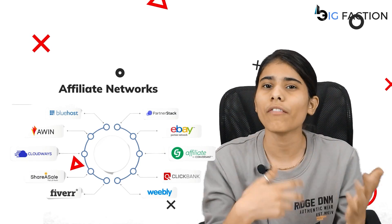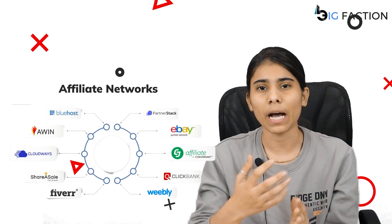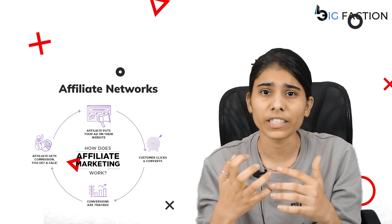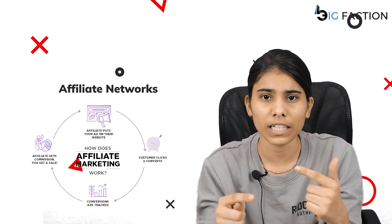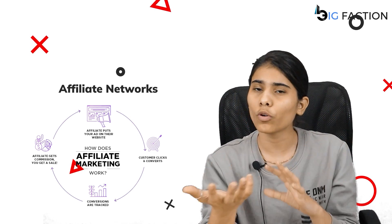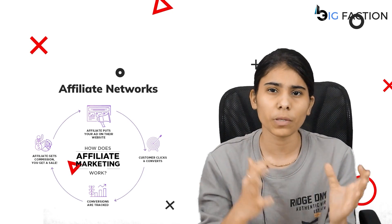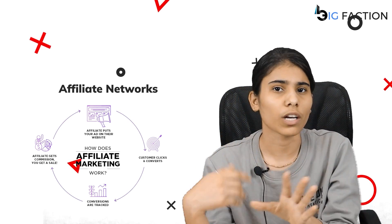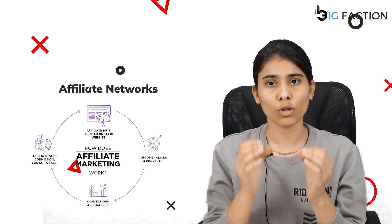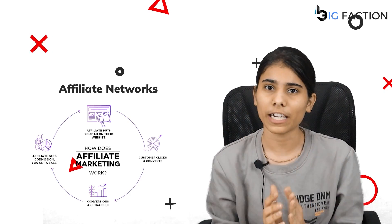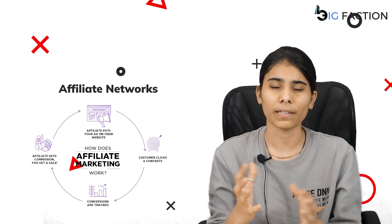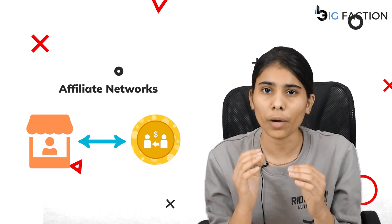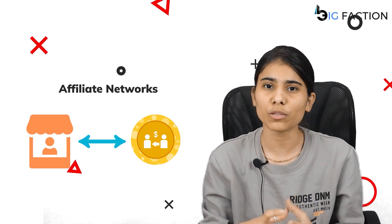The affiliate network is basically a type of website where vendors can list their products. Affiliates come to the website, select and choose products, get approved, and then promote those products accordingly. So the affiliate network is a mediator, a bridge that works for both vendors and affiliates to simplify all the processes.